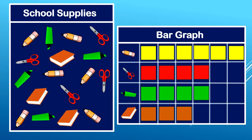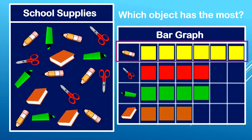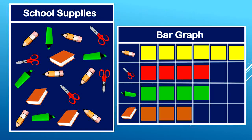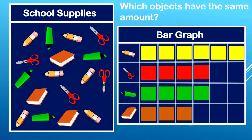Now let's answer some questions about this bar graph. First question: which object has the most? Let's look at our bar graph and see which of our rows is filled in the most. That would be the pencils — there are more pencils than anything else. Next question: which object has the fewest? Let's look at our bar graph and see which row has the least amount of boxes filled in. That would be the books. Great job. Last question: which objects have the same amount? Looking at our bar graph, are there two objects that have the same amount of items? That would be scissors and markers. Great job.